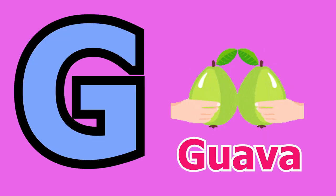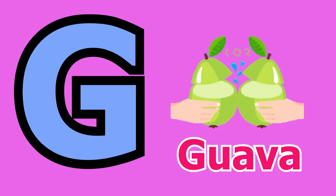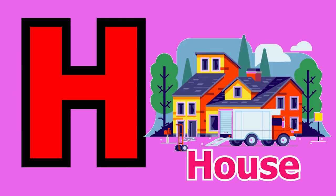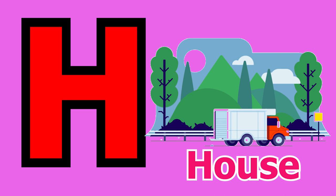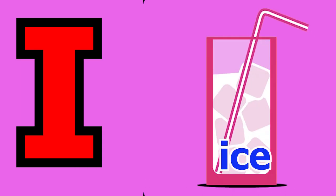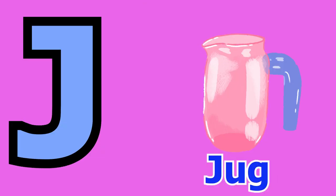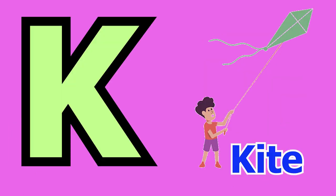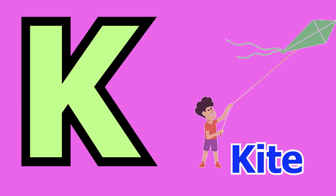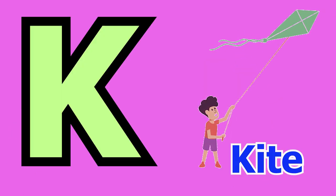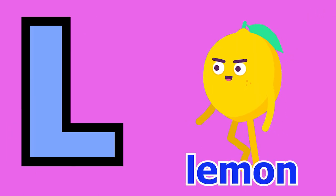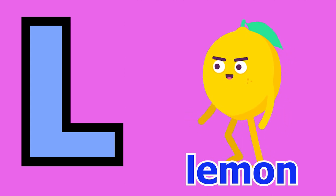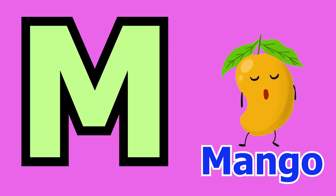G for guava, H for house, I for ice, J for jug, K for kite, L for lemon.